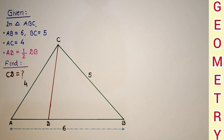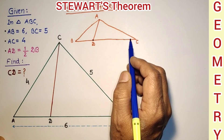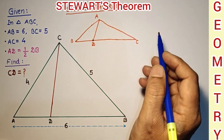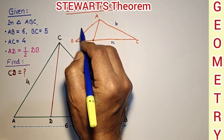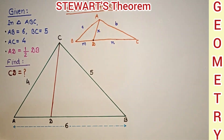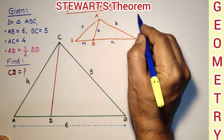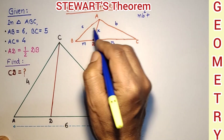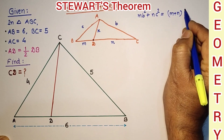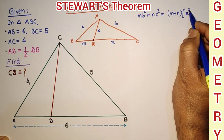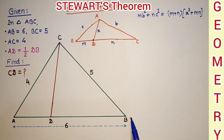First we will use Stewart's theorem. In Stewart's theorem, if triangle ABC is given and D is any point on base BC such that BD to DC is in ratio M to N, and if AD is X, then according to Stewart's theorem: M·b² + N·c² = (M + N)·x² + M·N.